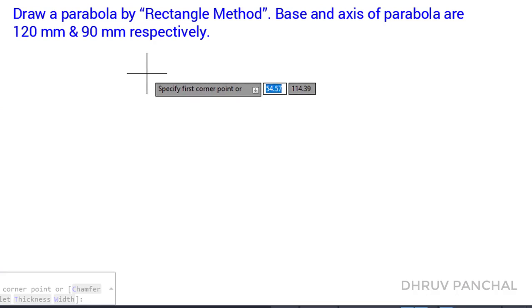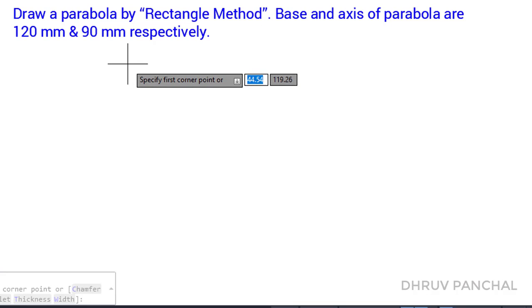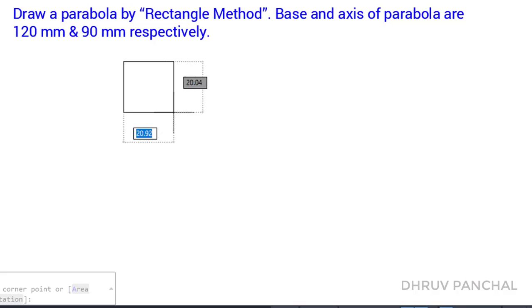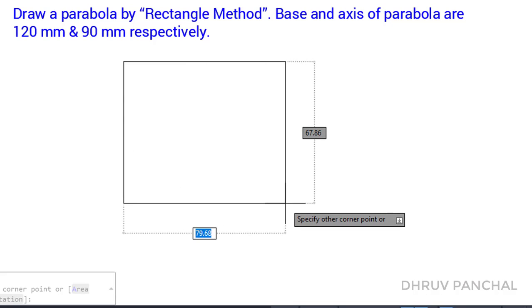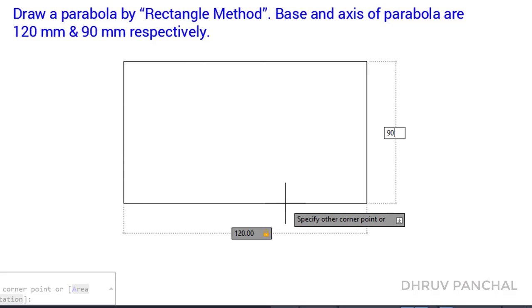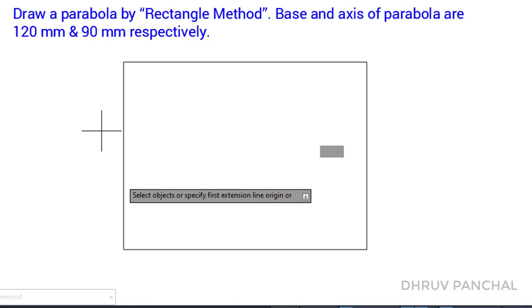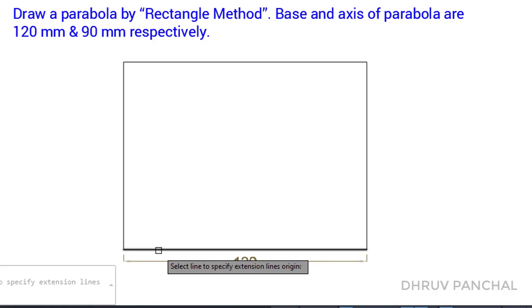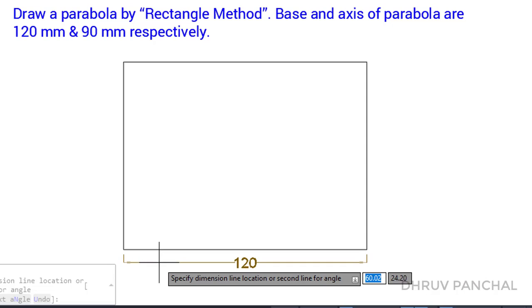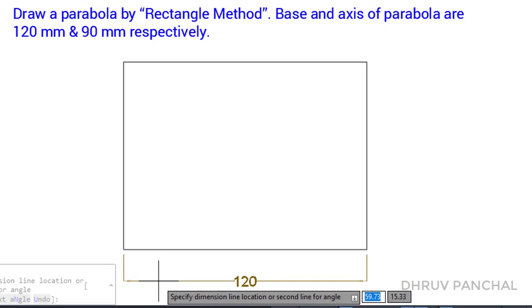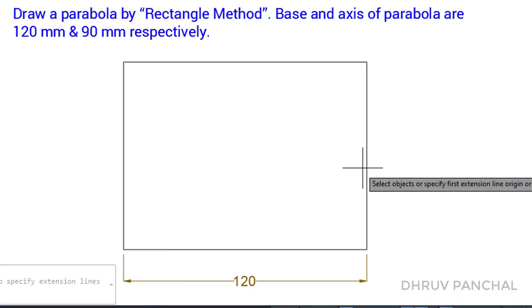As per the given data, we will draw a rectangle of 120 mm by 90 mm. Mention the side dimensions of the rectangle as 120 mm and 90 mm.